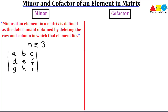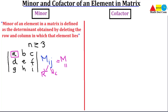When asked to find the minor of an element, you first choose that element. M stands for minor. We write M-I-J, where I and J represent the row and column in which that element lies. For example, if we take the element at the first row and first column, we write M-1-1.